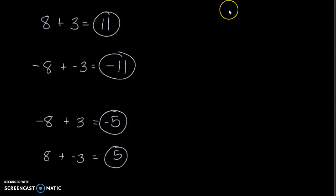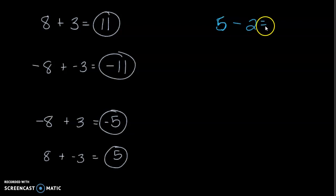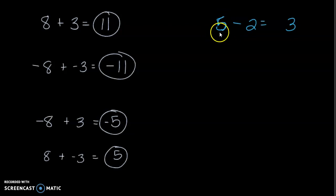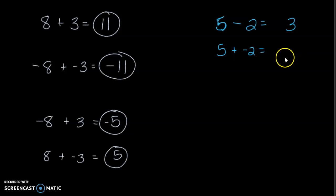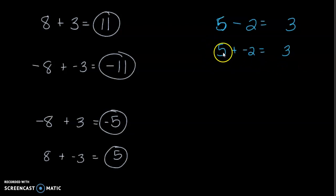Now let's do some subtraction. Five minus two — you know that's probably three. You could also do keep-change-change in this situation. Keep five, change subtraction to addition, change positive two to negative two. Now we follow those addition rules again: find the difference between these two, which is three. The more powerful number with the greater absolute value keeps the sign — five is positive, so the answer is going to be positive three. Now what if I did five minus negative two? Keep the five, change subtraction to addition, change the sign of the second number — so instead of negative two, it's positive two. Now we have a positive seven.